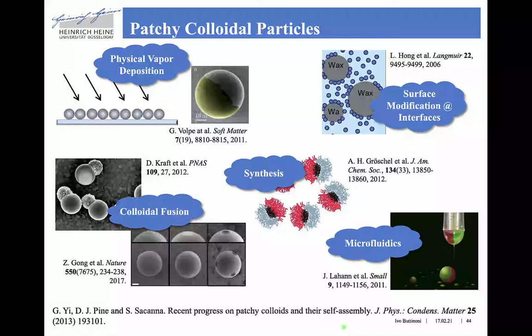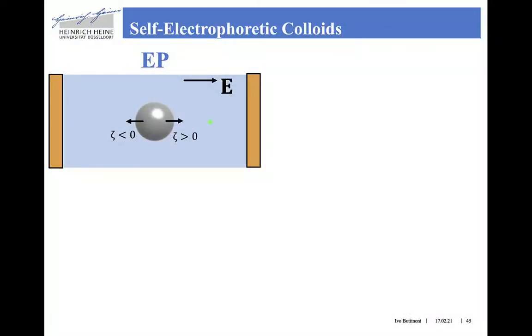We will just assume that these patchy particles — also called Janus particles when they are made of two hemispheres of different materials — are ready to be used. Following the order used in the case of phoretic transport phenomena, we start with electrophoresis.